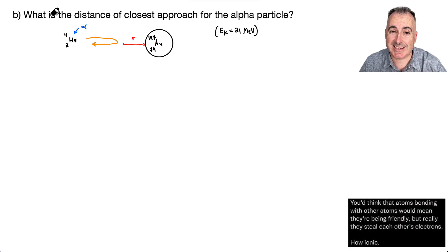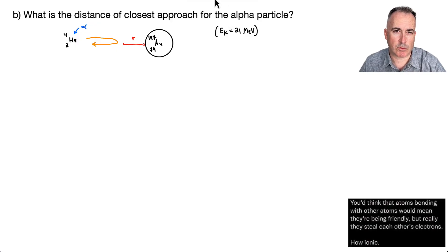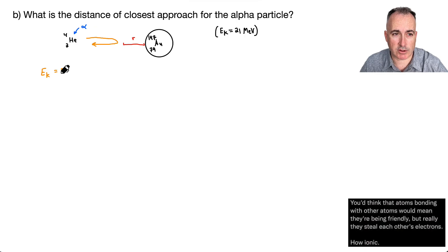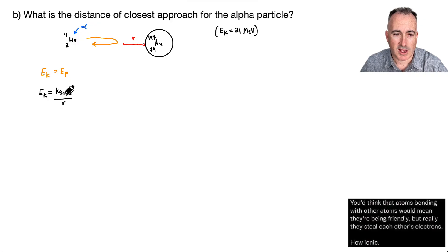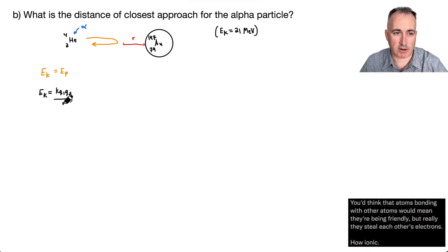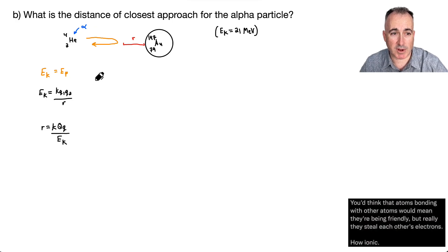For Part B, we find the distance of closest approach. The initial kinetic energy of the alpha particle is 21 mega electron volts. Since EK equals EP, we have EK equals kQ₁Q₂ over R. Rearranging gives R equals k times capital Q times lowercase q, all over EK. That's our equation for the distance of closest approach.